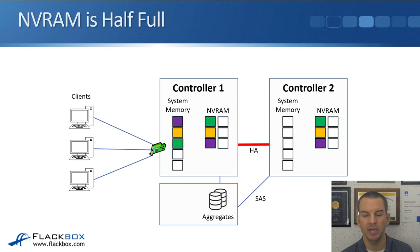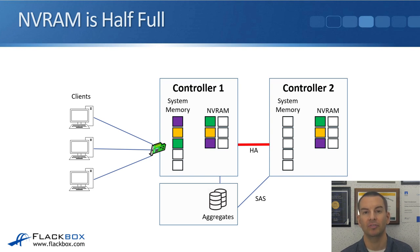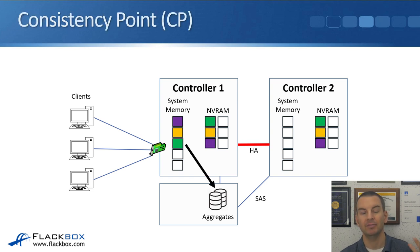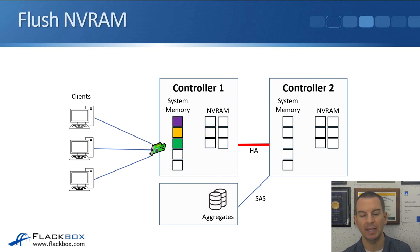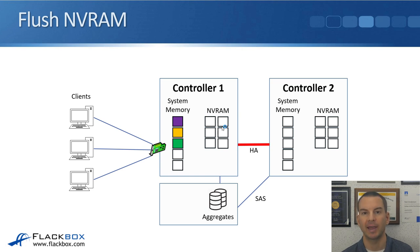At this point, notice that NVRAM is half full. When NVRAM is half full, it's time to write that data to disk, and we do that with a CP — a consistency point. At the time of the CP, the data is written down to the disk from system memory on Controller 1. Once the data has been written to disk, we then flush NVRAM and empty it so it's ready to accept new data.